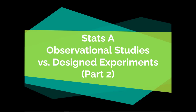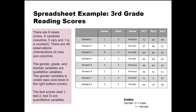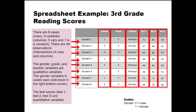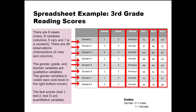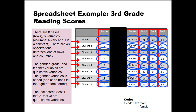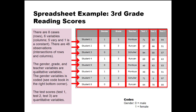We will be continuing to discuss observational studies and designed experiments. In the last video we started to discuss variables. Variables are characteristics that we want to measure in our research — it is the measurement that is presumed to vary. Some variables can be manipulated, controlled, or measured. Here is the same spreadsheet I used in the last video. The eight cases are the rows and the six variables are the columns. The variable that does not vary is the grade — this is a constant. Because there are eight cases and six variables, we have 48 observations.